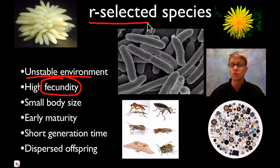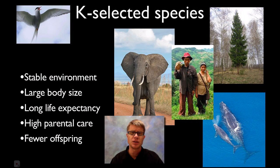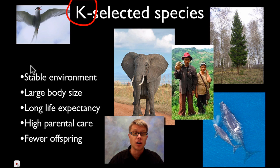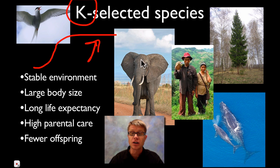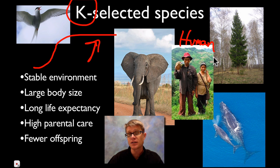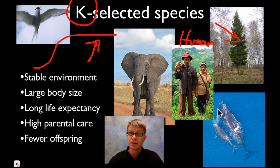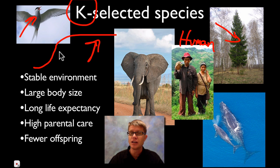K selected species put their lives around carrying capacity — they're in it for the long haul, going through exponential and then logistic growth. They want to live a long time, generally in a more stable environment. They're larger in body size, live much longer, and there's a lot of parental care. You as a human are K selected. Compare a dandelion to a tree — some trees live hundreds if not thousands of years. Whales are also K selected. But you don't have to be big: the arctic tern lives decades and has a lot of parental care, making it K selected too.